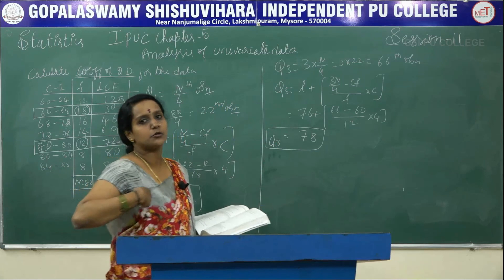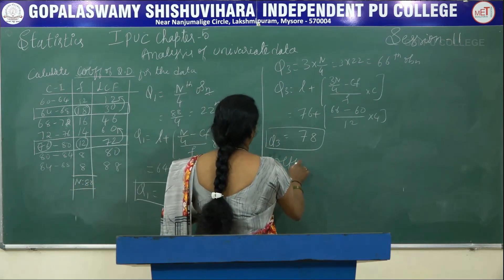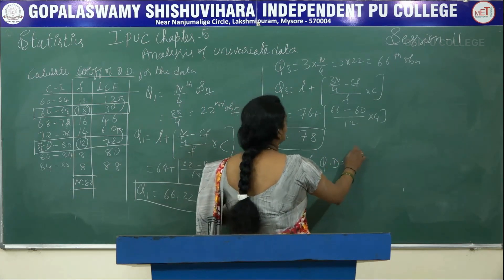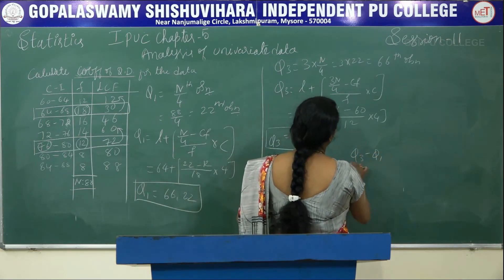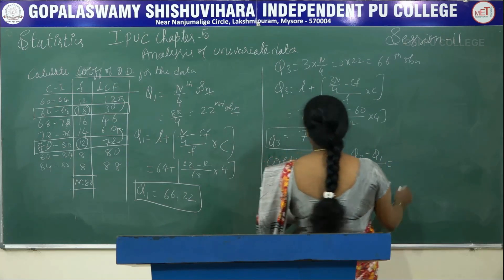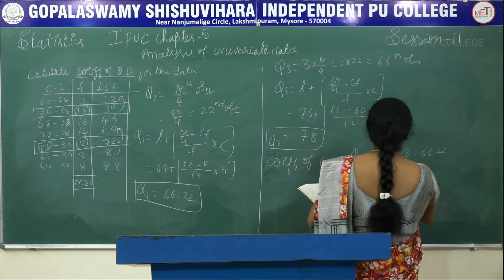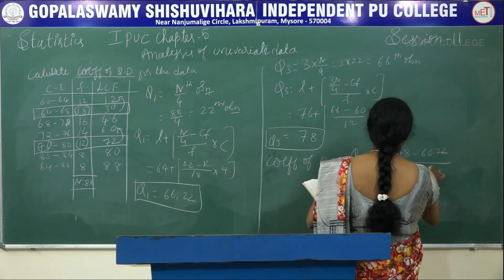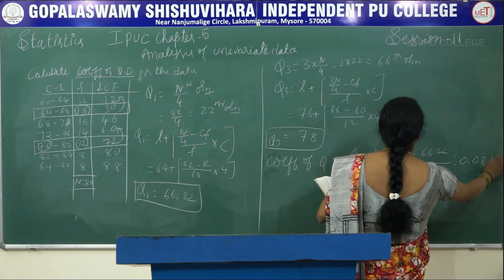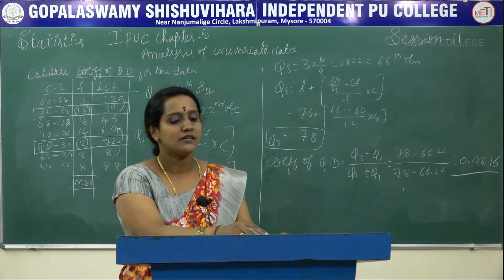After finding Q3 and Q1, find the coefficient of quartile deviation. It is Q3 minus Q1 by Q3 plus Q1. Substituting: 78 minus 66.22 divided by 78 plus 66.22, giving 0.0816.